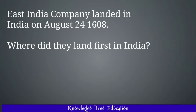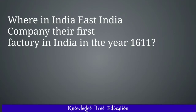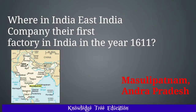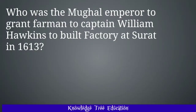Where did they land first in India? And the answer is Surat of Gujarat, where the East India Company founded their first factory in the year 1611. And the answer is Masulipatnam of Andhra Pradesh. Who was the Mughal Emperor to grant Farman to Captain William Hawkins to build a factory at Surat in 1613?